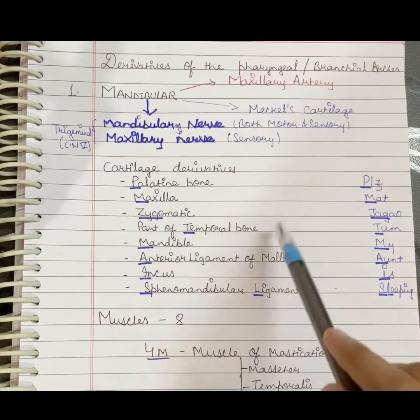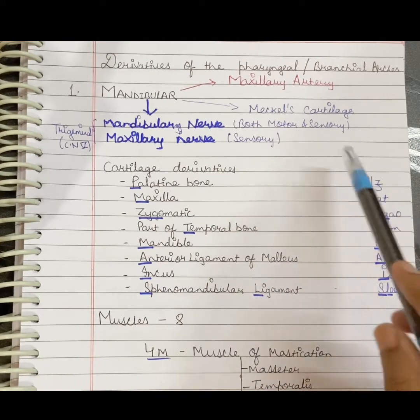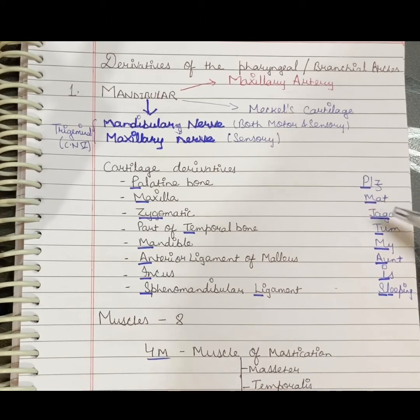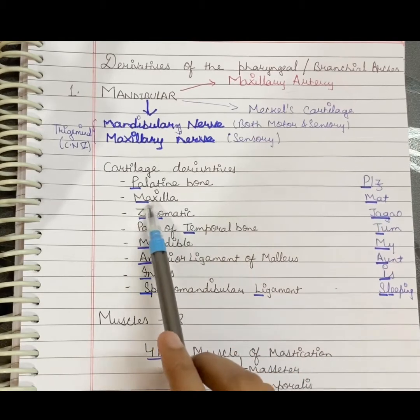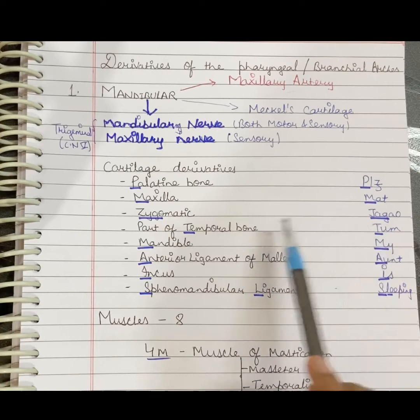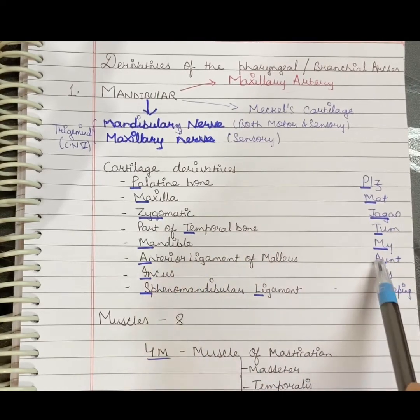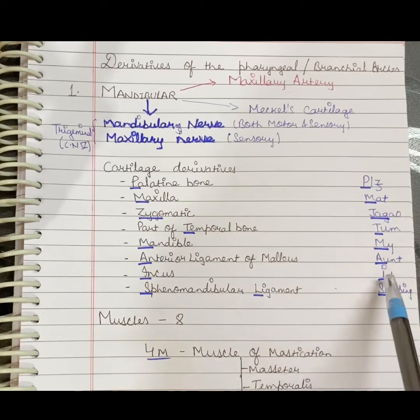How will you remember all these cartilage derivatives? I have formed a simple mnemonic to remember them: Please My Aunt Is Sleeping. P stands for palatine bone, M for maxilla, A for zygomatic bone, T for temporal bone, M for mandible, A for anterior ligament of malleus, I for incus, S for sphenomandibular, and L for ligament.